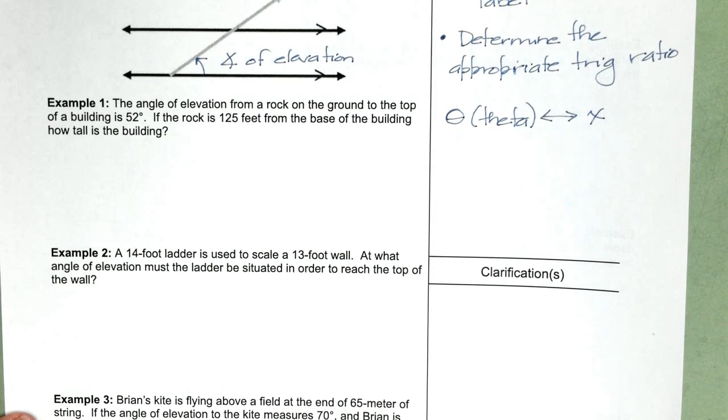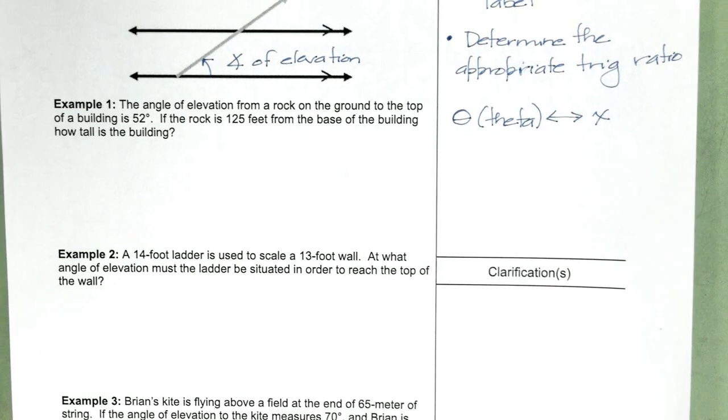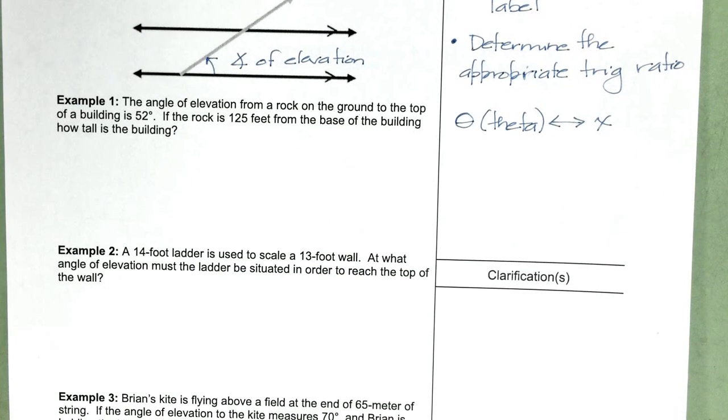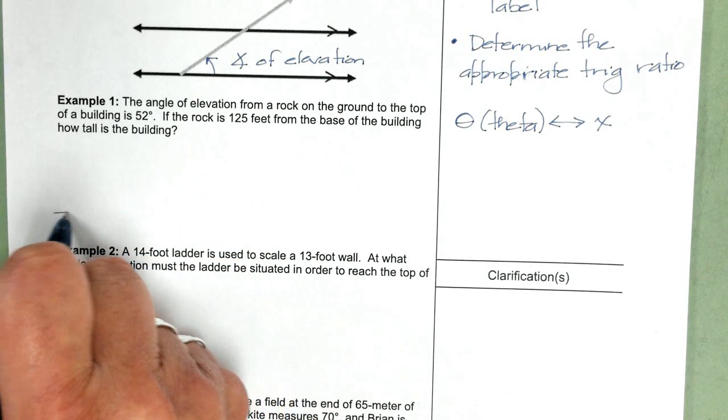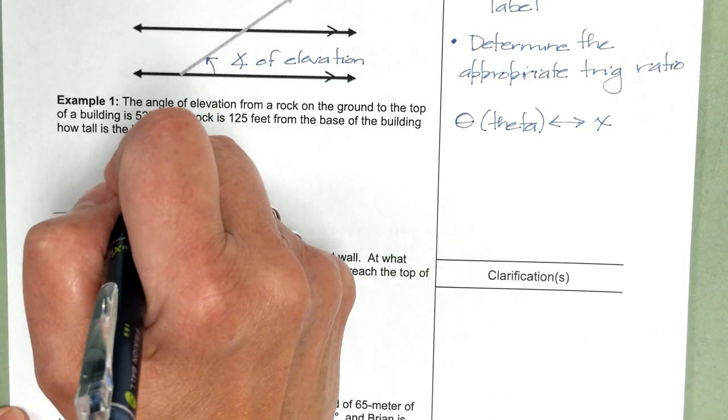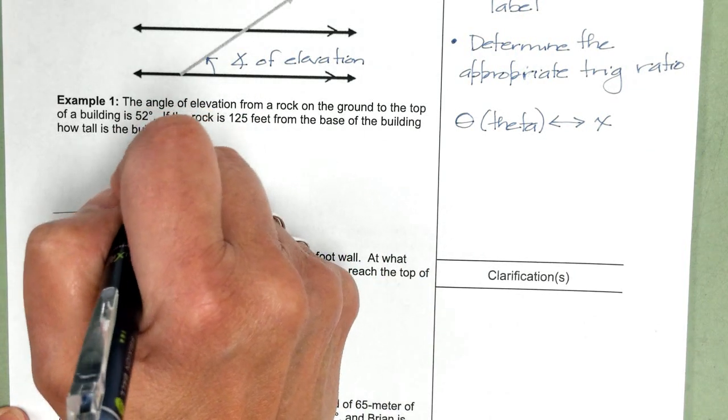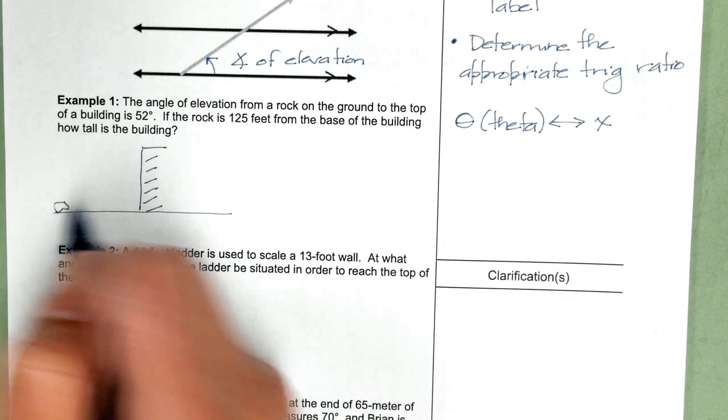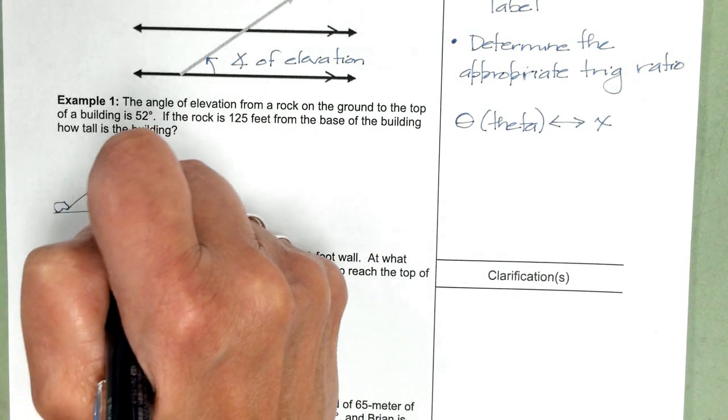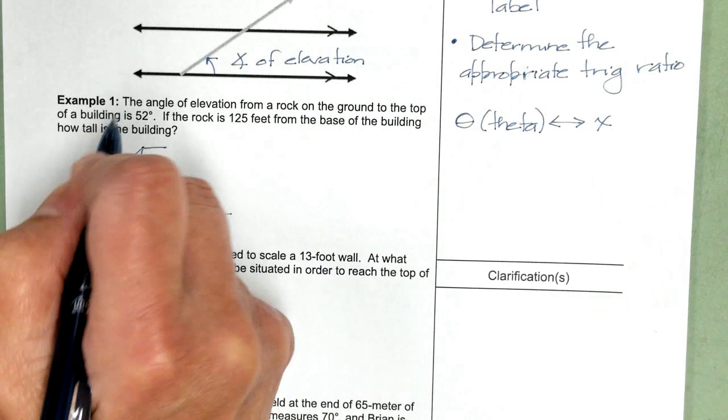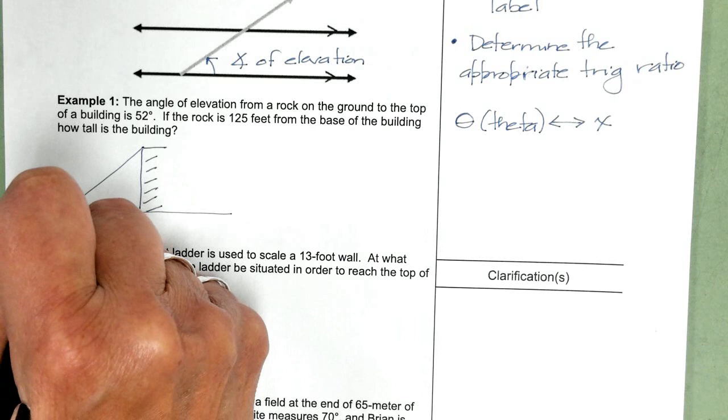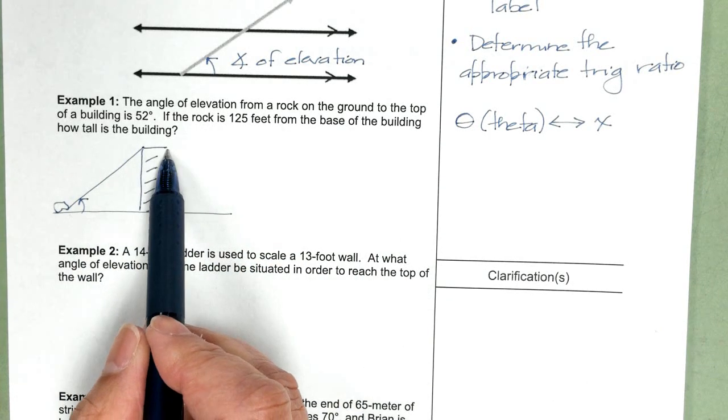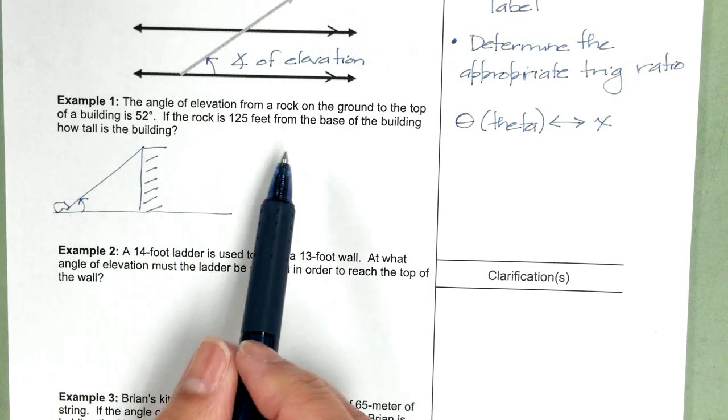So let's start with example one. Angle of elevation from a rock on the ground to the top of a building is 52 degrees. The rock is 125 feet from the base of the building. How tall is the building? So again, we start with a sketch. Here's the building. Here's the rock. Here is the angle of elevation from the rock to the top of the building. So there's our sketch.